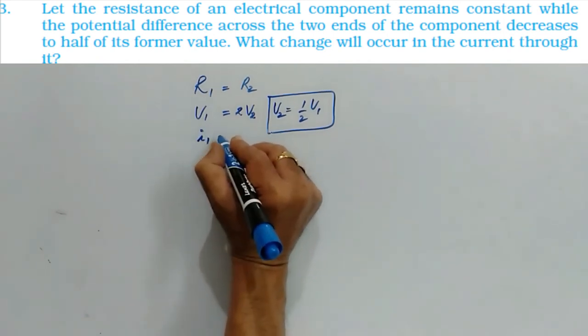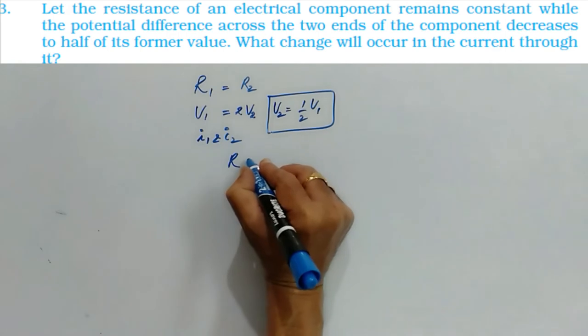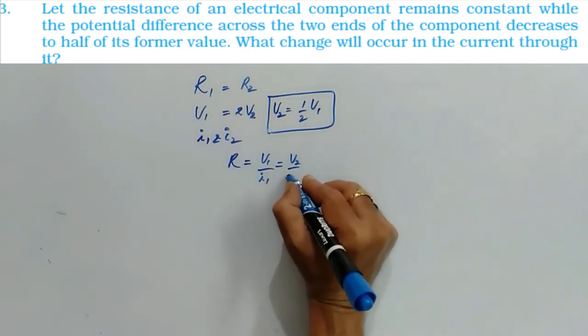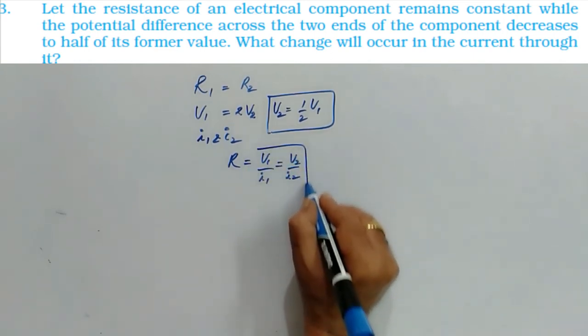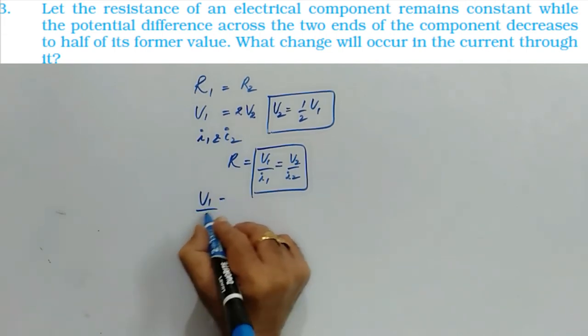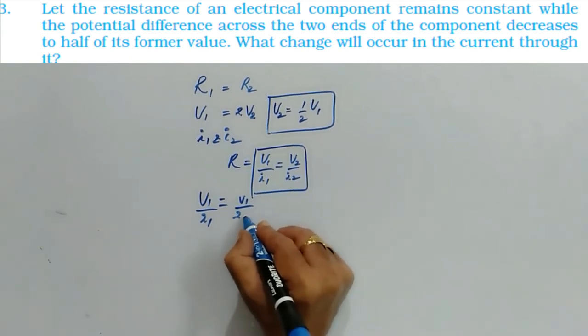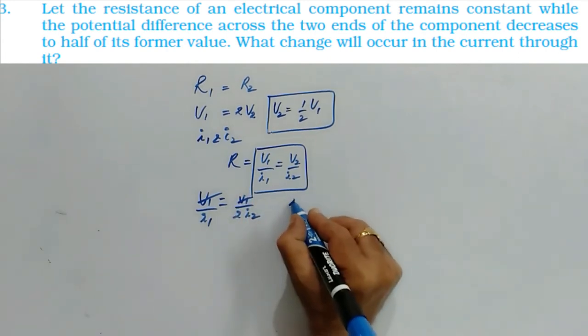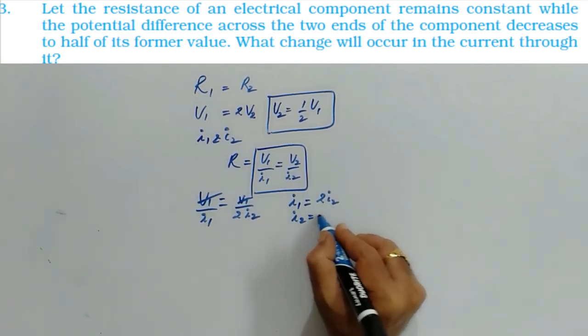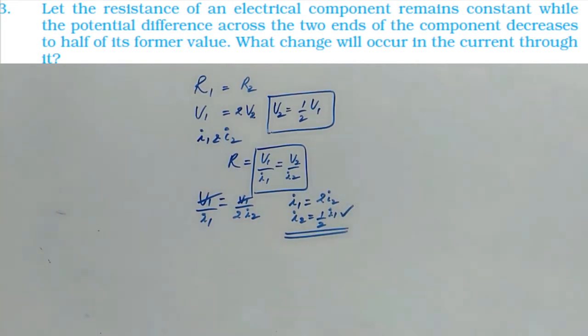So as resistance is same, which is V by I, so we can write V1 by I1 is equal to V2 by I2. Now let us substitute the values here. So V1 by I1 is equal to V2, V2 how much, V1 by 2, by I2. So I can cancel out this and I can write I1 is equal to 2 I2. Therefore I2 is equal to half of I1. That is, if potential difference is reduced to half, the current will also be reduced to half.